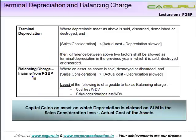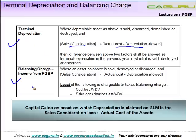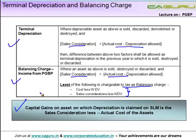To reiterate: whenever depreciation cannot be fully claimed and the sale consideration is less than the WDV — which is actual cost less depreciation allowed — the difference is allowed as terminal depreciation in the year in which the asset is sold. In case the sale consideration is greater than the WDV, the amount is broken into two parts: to the extent depreciation was already claimed in earlier years, it is taxed as balancing charge using that formula, and the balance is chargeable to tax as capital gain.